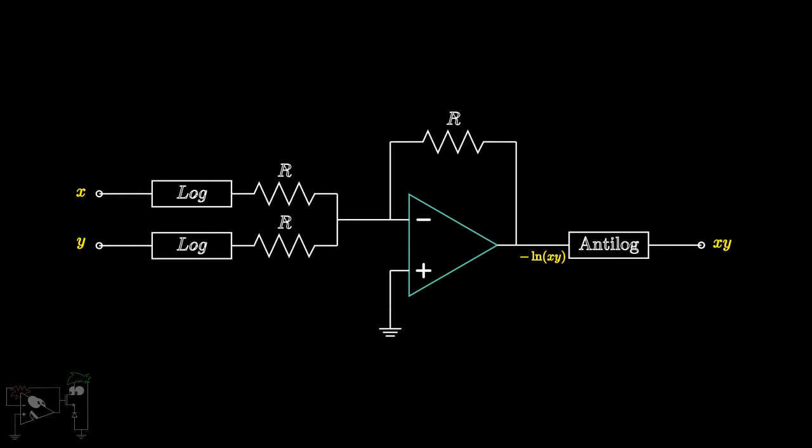Note that the log and the antilog amplifiers are the same ones as those we saw in the last video. They have been shown as blocks, so as to help you understand the multiplier circuit. This circuit is known as the log-antilog multiplier because that's exactly what we are doing.